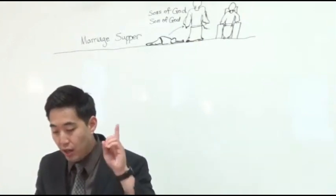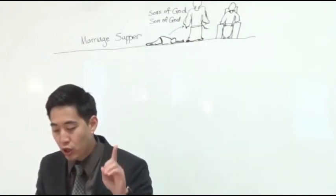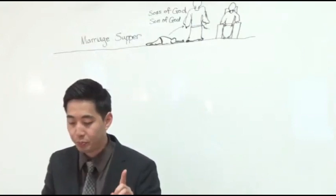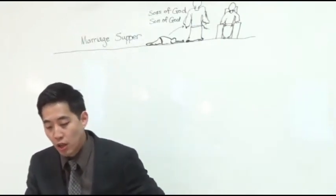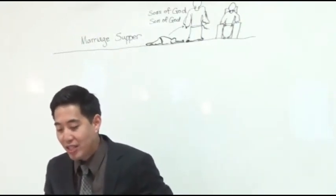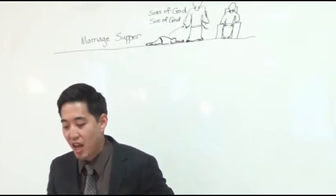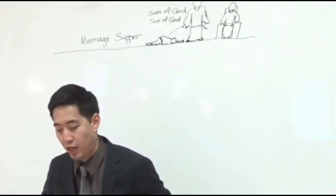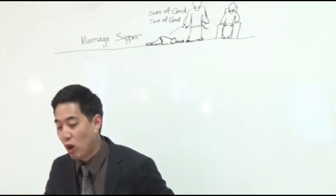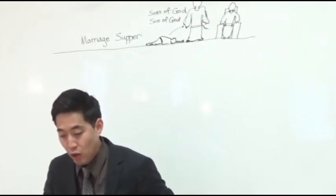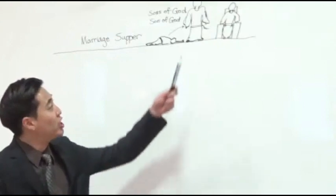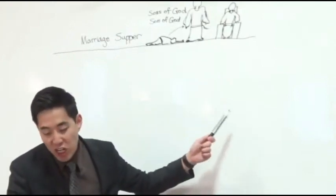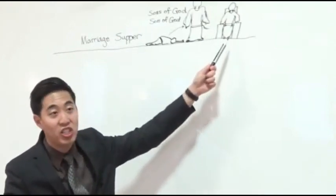1 John chapter 3. Look at verse 2. Now are we the sons of God, and it doth not yet appear what we shall be. So the appearance is not shown yet what we're going to be like. But we know, but this is what we know, what our appearance is like. When he shall appear, Jesus, when he appears, we shall be like him. We're going to be like Jesus.